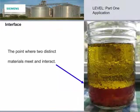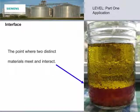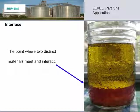The last term is interface. It refers to the point where two distinct materials meet and interact. Sometimes, in one vessel, you will have two liquids of different densities creating a layered effect. Interface level measurement is one of the most challenging level measurement applications. However, contact technologies like guided wave radar and capacitance are well suited to deal with these conditions.